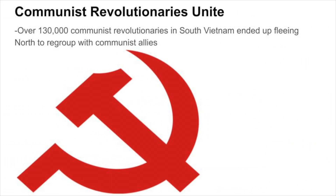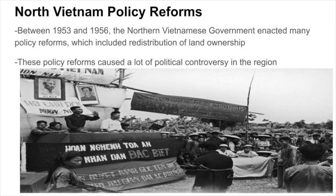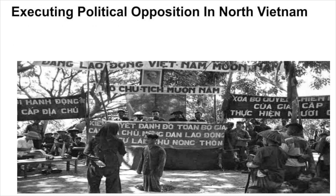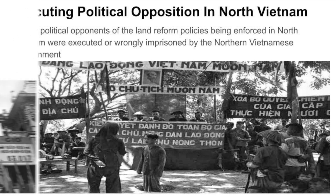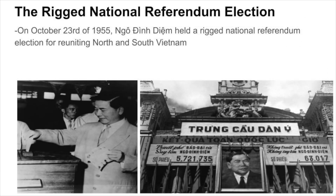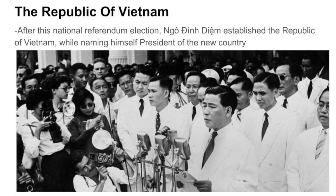Over 130,000 communist revolutionaries in South Vietnam fled north to regroup with communist allies. Between 1953 and 1956, the Northern Vietnamese government enacted many policy reforms, including redistribution of land ownership, causing political controversy. Many political opponents of these policies were executed or wrongfully imprisoned. On October 23rd of 1955, Goh Dinh Diem held a rigged national referendum election, with results falsely showing 98.91% of voters supported Southern Vietnamese independence. After this election, Diem established the Republic of Vietnam, naming himself president.